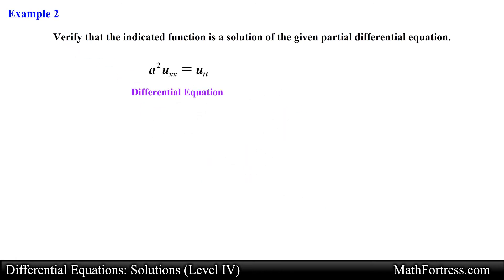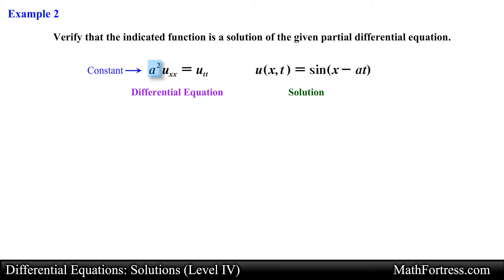The partial differential equation is a² times the second partial derivative of u with respect to x equals the second partial derivative of u with respect to t, and the solution we need to verify is u equals sine of (x minus a·t). Notice that this PDE is written using subscript notation as opposed to Leibniz notation from the previous example. Also notice that we have the constant a² — keep in mind that this is just a constant.